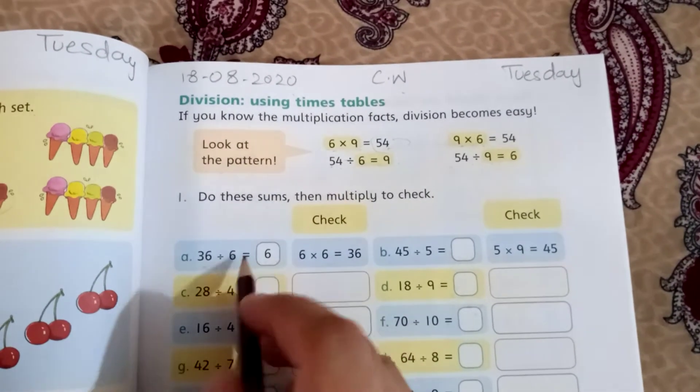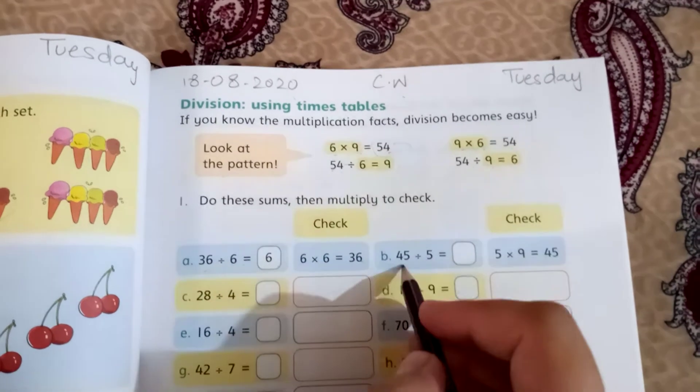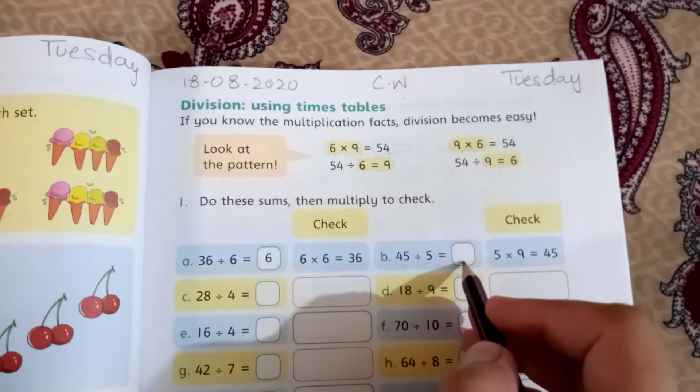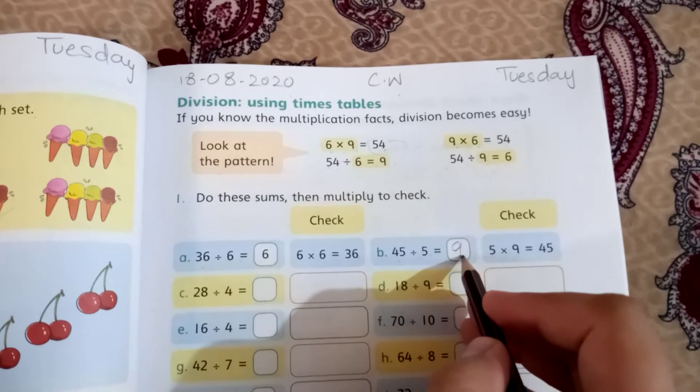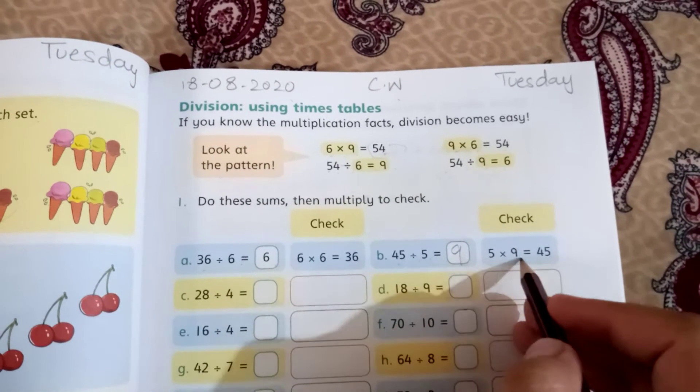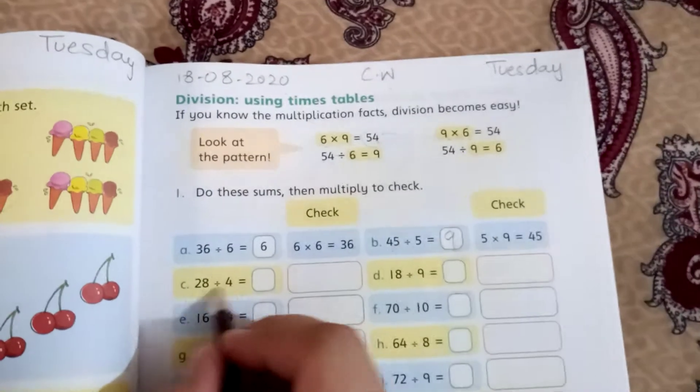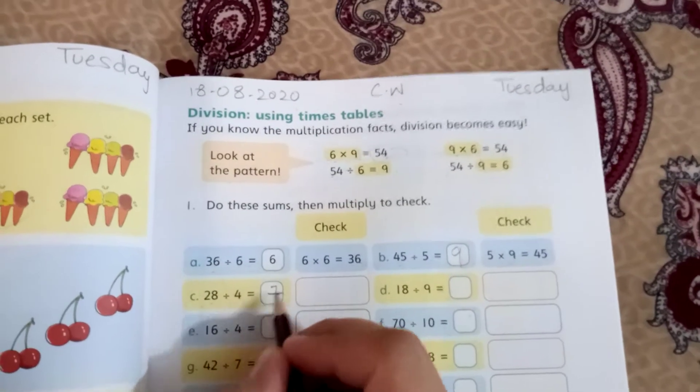36 divided by 6: 6 sixes are 36. 45 divided by 5: think if 5 fits in 45. 9 fives are 45. 28 divided by 4: 4 sevens are 28.